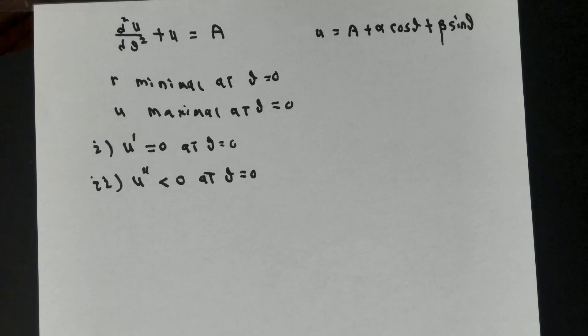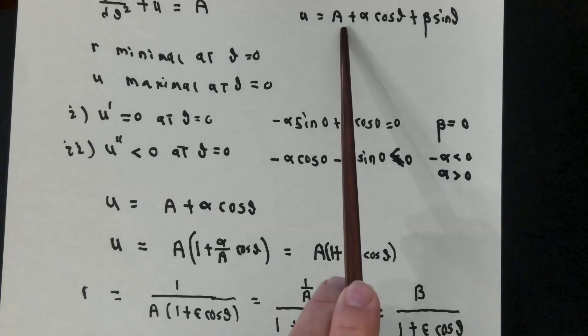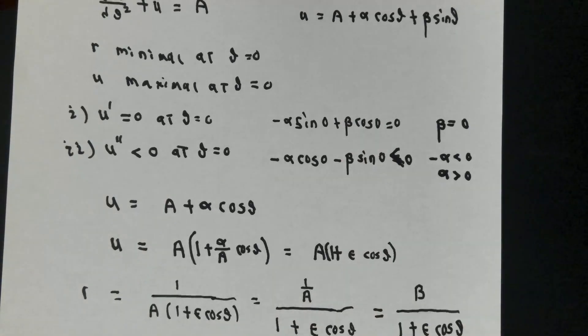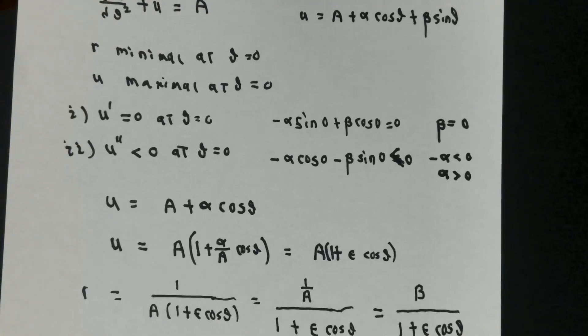So that the graph of u versus theta is concave down at that point, and I get a maximum. Putting these two facts into the solution, I find out that firstly, beta has to be zero. Secondly, I find out that negative alpha must be negative, so alpha must be positive. That tells me that u is this positive constant a, gm over h squared in terms of the physics, plus a positive number times cosine theta.